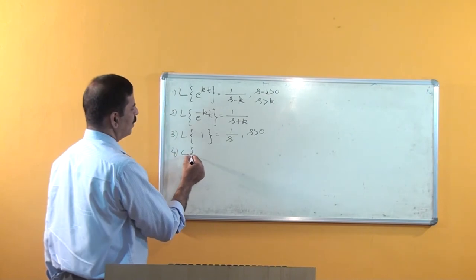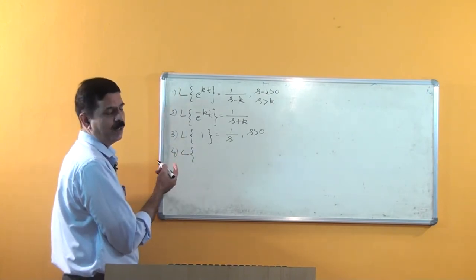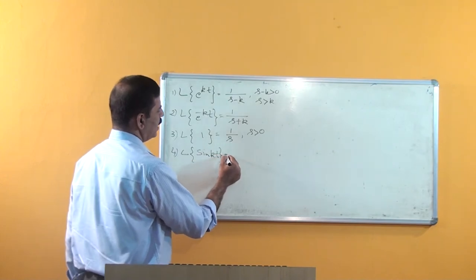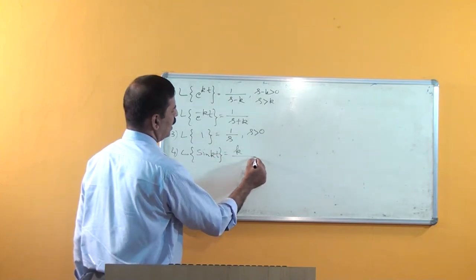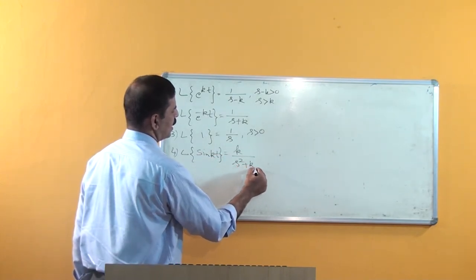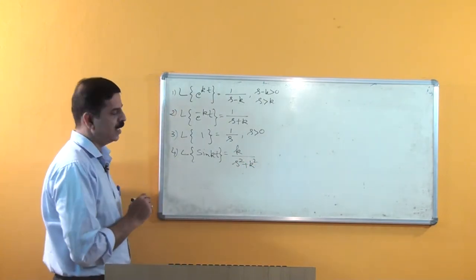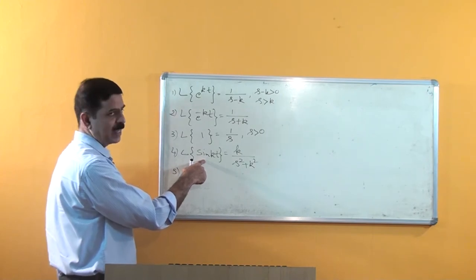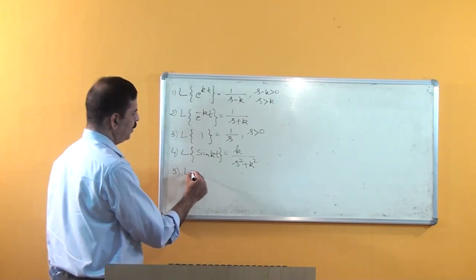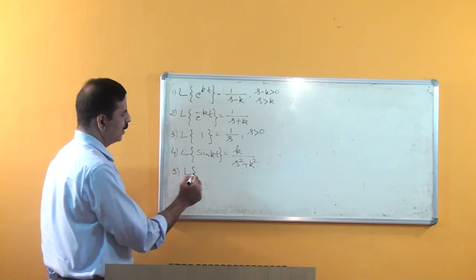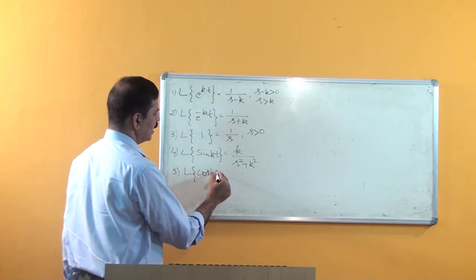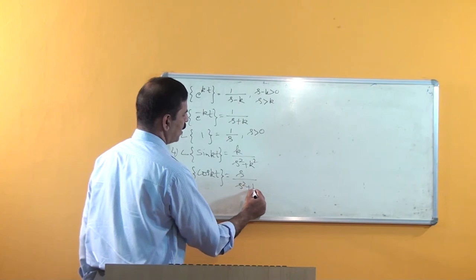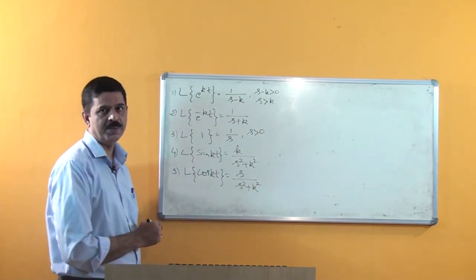Another formula we observed: Laplace of sin(kt) is equal to k/(s² + k²). I leave it to you to work out that Laplace of cos(kt) is equal to s/(s² + k²).